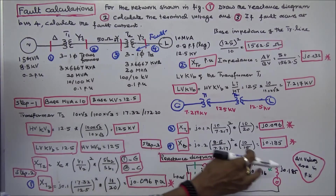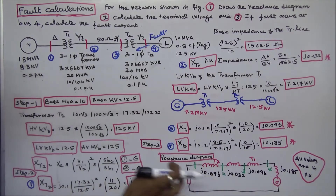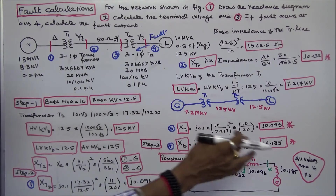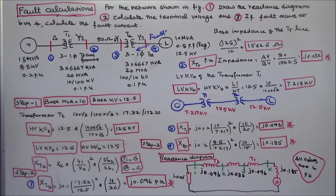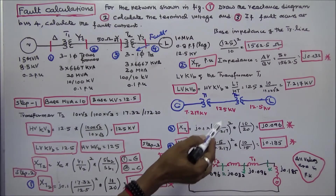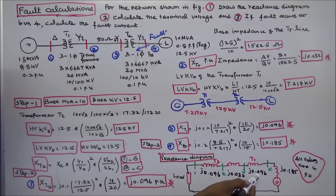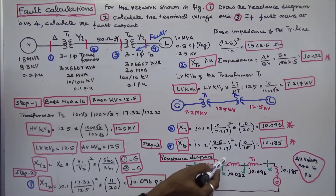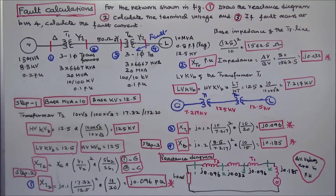Now I can draw the reactance diagram — that is Step 3. All values are in per unit. Generator reactance is j0.185, Transformer 1 reactance is j0.096, transmission line reactance is j0.032, and Transformer 2 reactance is j0.096.